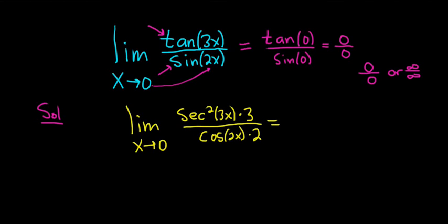Let's rewrite this. We can write this as, let's pull out the 3 over 2. Limit as x approaches 0, and now secant squared of 3x, we can write that as 1 over cosine squared of 3x, right, because secant is 1 over cosine, all divided by cosine 2x.